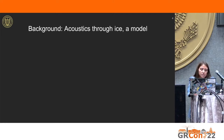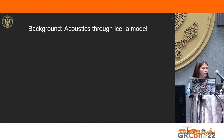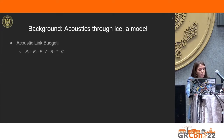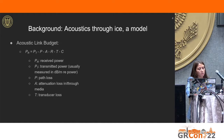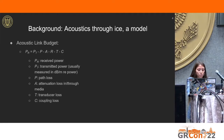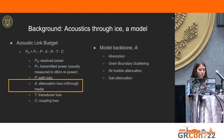We know about the characteristics of ice and their acoustic effects, but how do these measurements turn into an acoustic model within the context of an entire system? A concise way to describe it is a link budget, where PR and PT are received and transmitted power, P is path loss, A is attenuation loss through the media, T is transducer loss, and C is coupling loss. Attenuation loss in and through the media is the model backbone — this is where the empirical equations for through-ice characterization come into play. The major contributors to attenuation loss in ice are absorption, grain boundary scattering, air bubble attenuation, and salt attenuation. You can think of these components almost like a channel model.